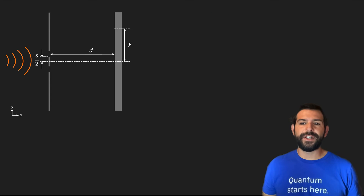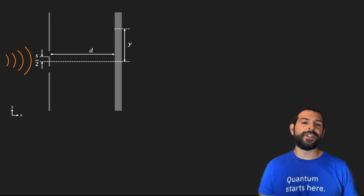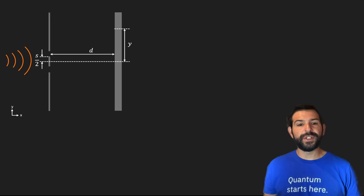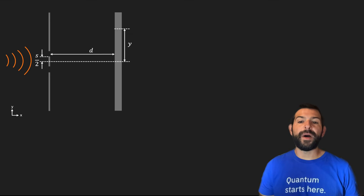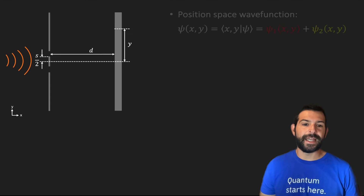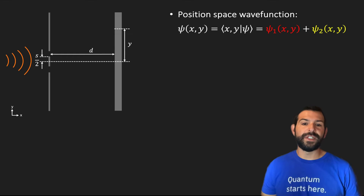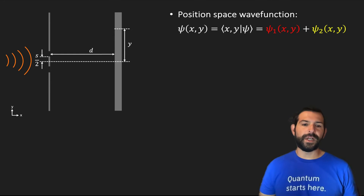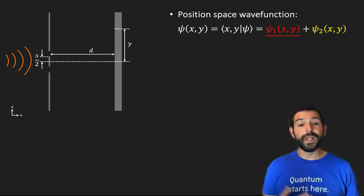What we want to do next is show mathematically why it is that we see an interference pattern at the screen. A particle is fully described by its wave function psi, which in this problem consists of a superposition of the wave emerging from the top slit plus the wave from the bottom slit.